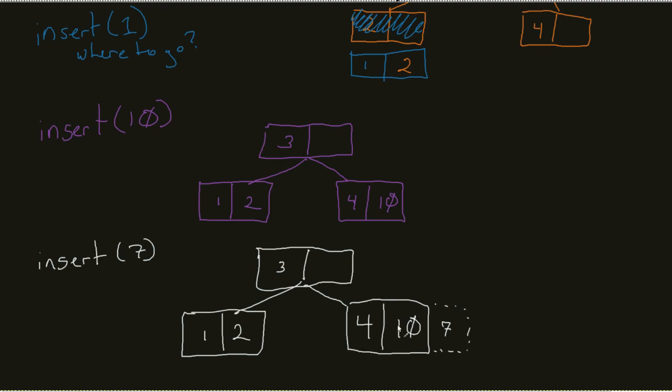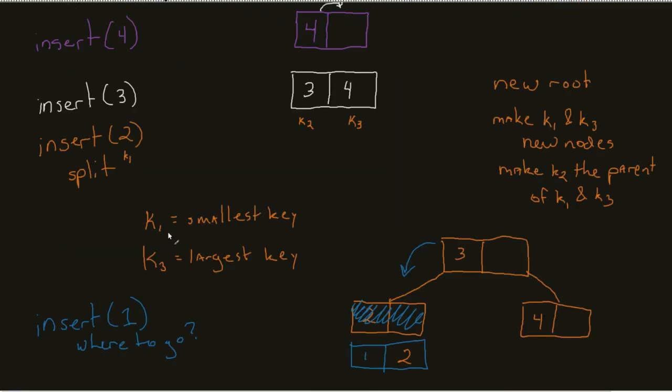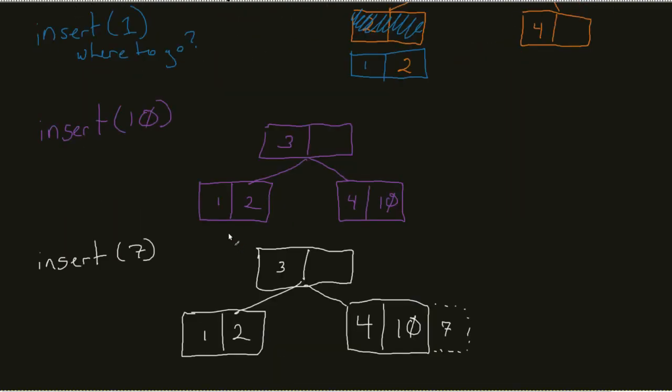So instead I have to make a decision. Well which one would be my K1? If we remember correctly, the K1 has to be the smallest key in that node, so that would be my 4. I have to look for my K3, my K3 is my largest key in that node, and then the leftover key in this case, 7, would come in and it would be our K2.